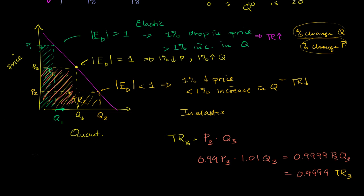So the general rule of thumb: when you are at unit elasticity, a decrease in price leads to approximately no change in total revenue. It really just comes from these areas. If you're reducing the height by less than you're increasing the width, the area increases. If you compensate perfectly, there's no change in revenue. And if you decrease the height by more than you're adding on the width, you get a total decrease in total revenue.